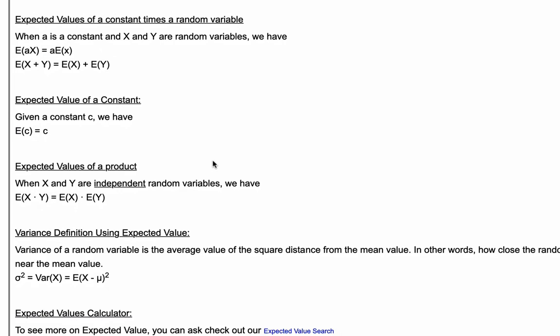If a is a constant and X and Y are random variables, we have the following formulas. E(aX) equals a times E(X). What this means is the expected value of a constant times a random variable X is just the constant times the expected value of X.